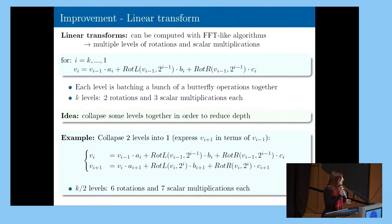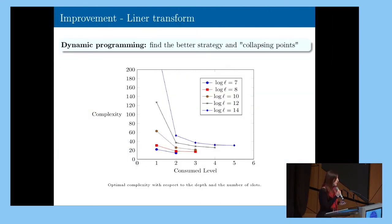So we try, of course, to find a trade-off in order to have a better evaluation. And in order to do that, we decided to use some dynamic programming that helped us decide the collapsing strategy and also the collapsing point. So in the image I show in the slide, you have on the horizontal axis the consumed levels that we decide to use. On the vertical axis, the corresponding complexity. And you can see that if we decide to collapse everything on a single level, the complexity will grow very fast, and every time we decide to use one more level, complexity is reduced.